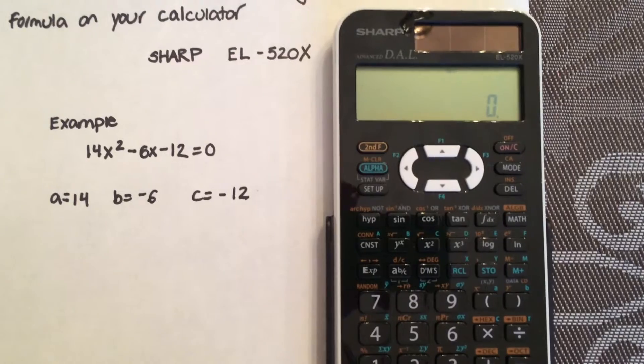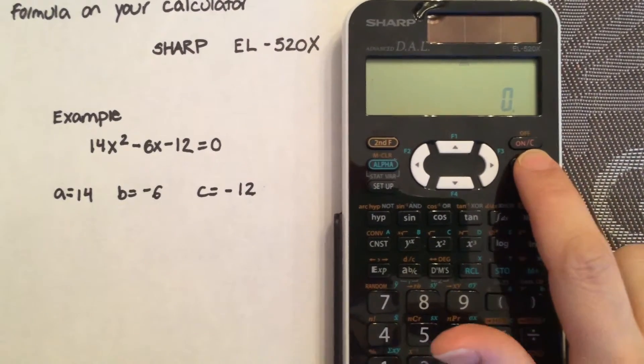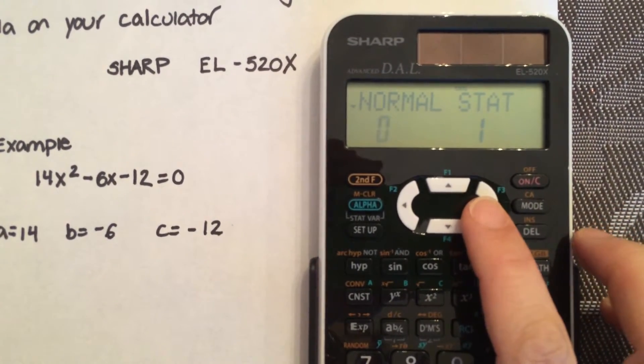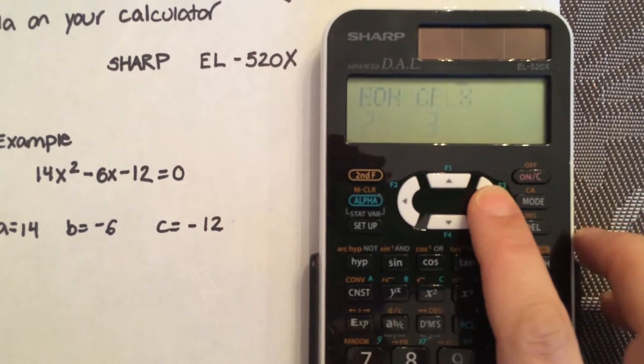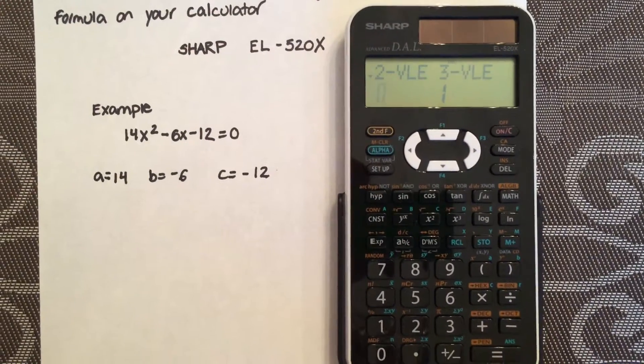Go to your calculator, select mode. You should see the screen like this. Scroll to the right twice until you see equation. You're going to select 2 for equation.